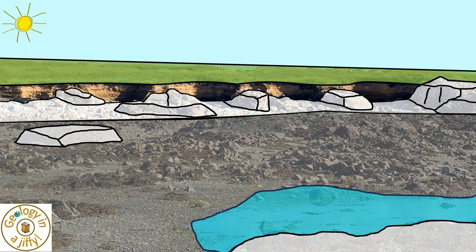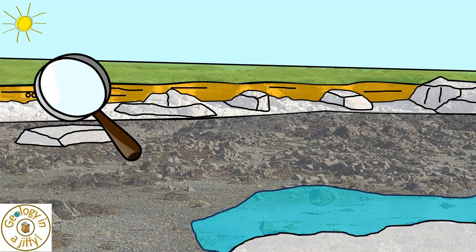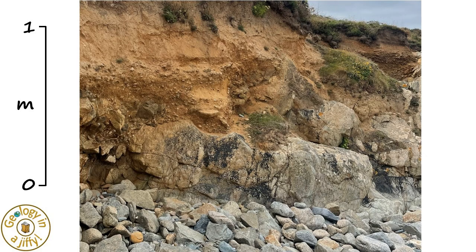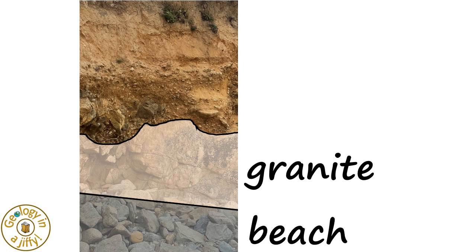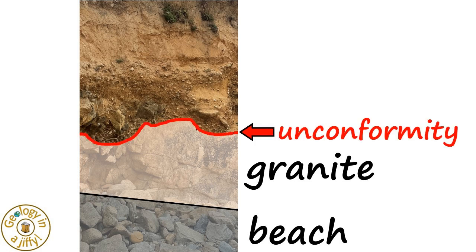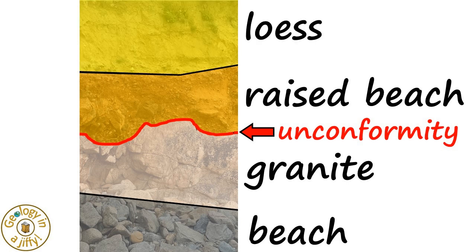Below the vegetated surface is a three-metre-high cliff. Examining it closely, at the base we have the pebble-covered beach, then the bedrock exposed with a smooth and curved surface. This is an unconformable surface representing several hundred million missing years of rock, with the sediment of the raised beach set upon the unconformity, and above this, glacial-originating head and loess deposits.